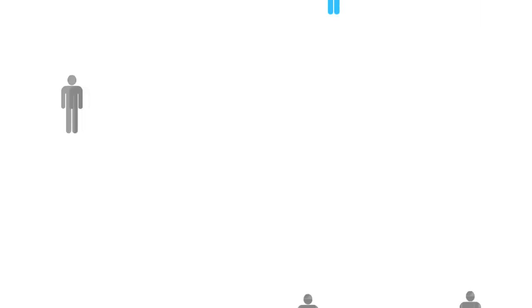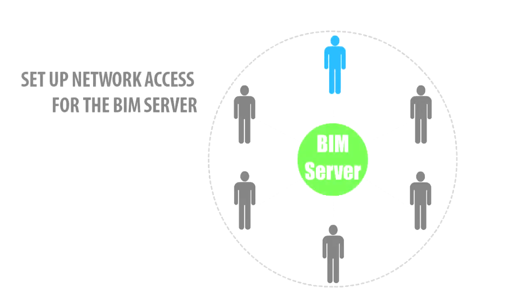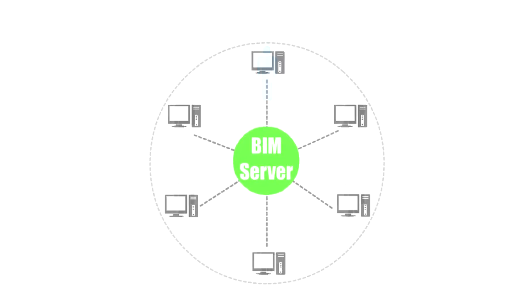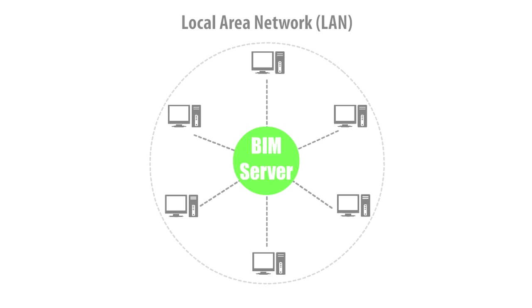Step number 4: Setup Network Access for the BIM Server. The BIM Server is prepared to provide access through any standard computer network to ARCHICAD clients. If you only want to access your BIM Server within your office's local area network, the setup is pretty simple. The identification of computers on a local area network is an automatic process that does not require any extra network configuration by default.